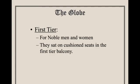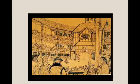If you were wealthier and wanted to pay two pennies so you could sit, in the first tier you'd see noblemen and women seated on cushioned seats. They didn't want to walk all the way upstairs, so they would actually have cushioned seats on the first tier balcony for the nobles.